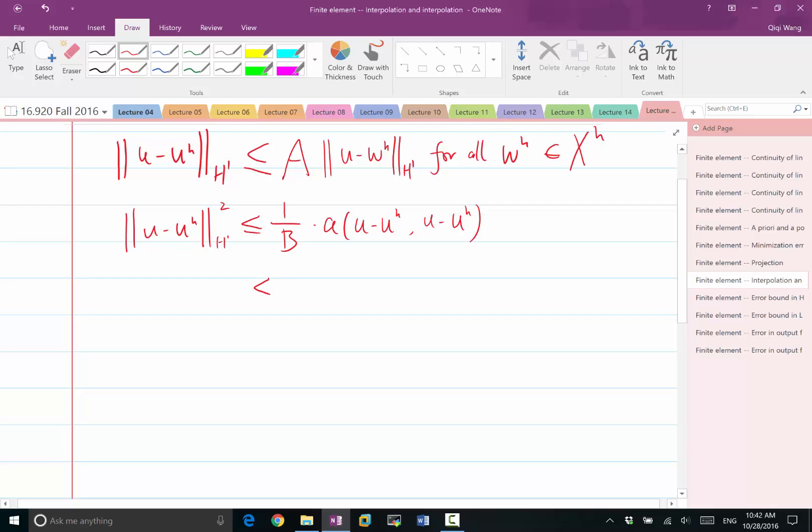And we know that the energy norm is the minimizer. So this is less or equal to 1 over B of U minus WH for all the possible WHs in XH.